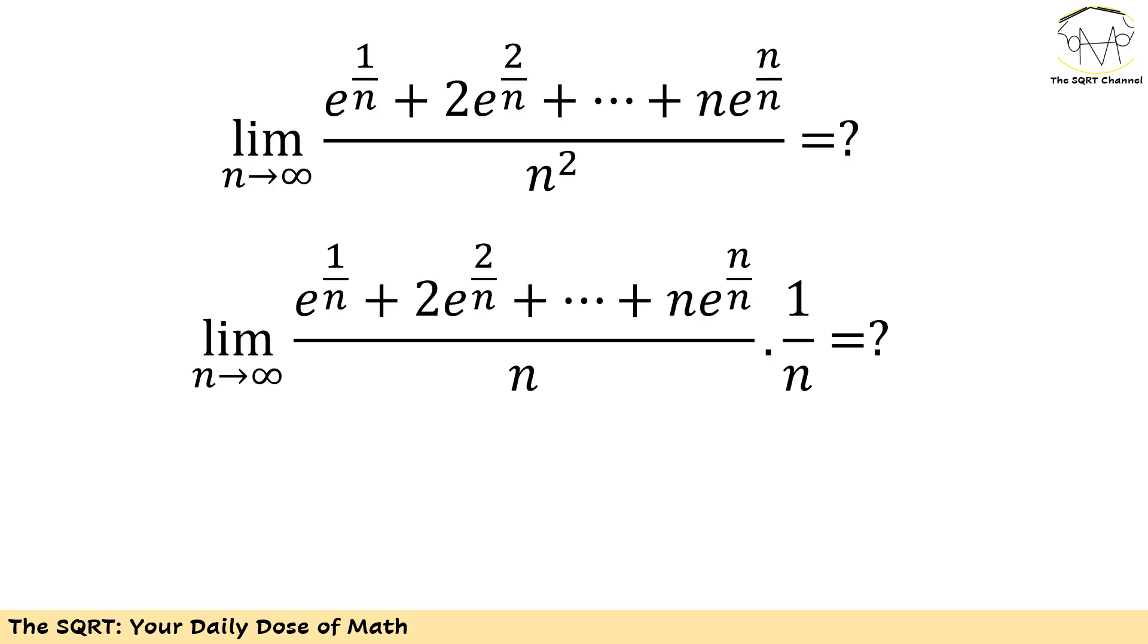Now I have e to the power of 1 over n plus 2 times e to the power of 2 over n and so forth, over n squared. Let's rewrite n squared in the bottom of this fraction as n times n, and then we are going to focus on the first expression.